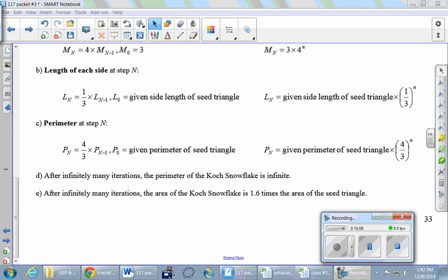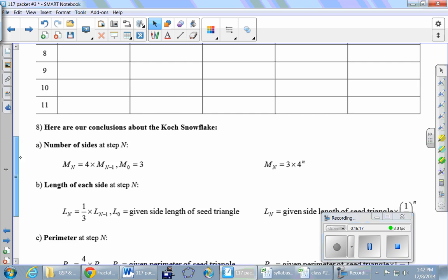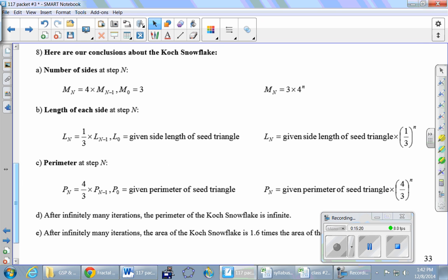Everybody back up here, please. Can I ask you guys to jump ahead to page 33 momentarily? At the bottom, starting at number 8, are some conclusions about the Koch snowflakes. Let's look at them one at a time. The number of sides. You guys wrote down this formula, MN equals 4 times MN minus 1, because we just kept multiplying by 4 in that first column. The explicit version is just the original number of sides, which was 3, times 4 to the power of N.